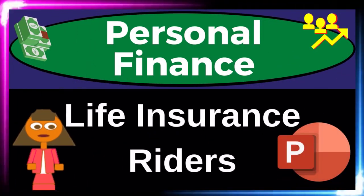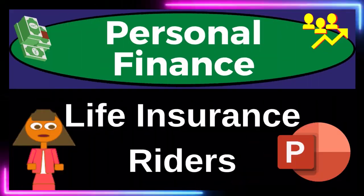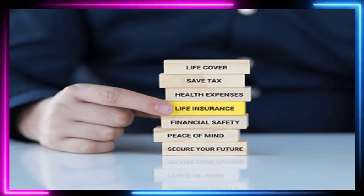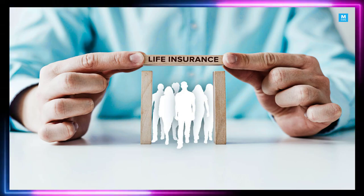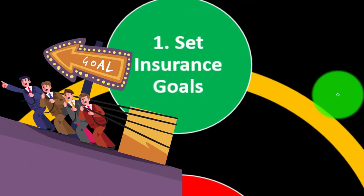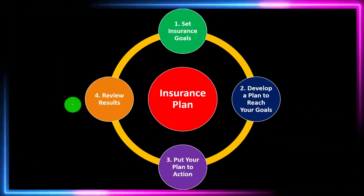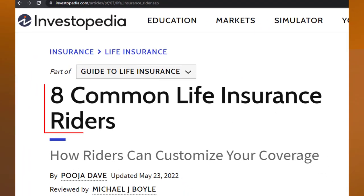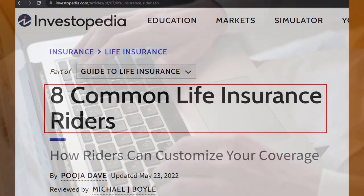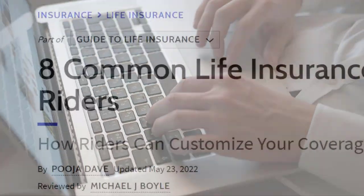Personal Finance PowerPoint Presentation on Life Insurance Riders. Prepare to get financially fit by practicing personal finance. Life insurance is part of our long-term risk mitigation strategy where we follow the adage of measure twice, cut once — put a formal process in place: set the goals, develop a plan to reach them, put the plan in action, review the results, and repeat the process periodically. Most of this information can be found at Investopedia, '8 Common Life Insurance Riders,' by Pooja Dave.